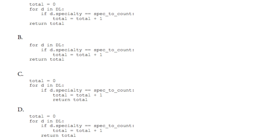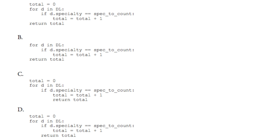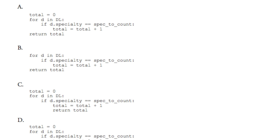And then D, we have total = 0 and then for D in DL, so everything's the same so far. And then we get to the return statement. So the return statement is in the for loop and it's the same situation as C. No matter what, it will always return one. And it's actually possible for it to return zero if the first doctor that it looks at does not have the equivalent specialty, it'll just skip the if statement and it will return zero. So C and D are sort of the same and they are both completely wrong. So A here is the correct answer.